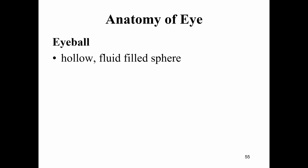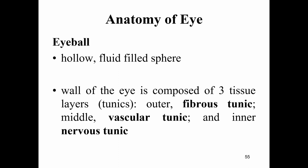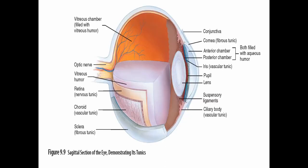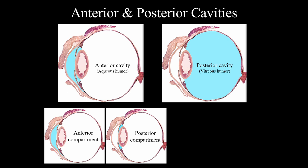The eyeball is a hollow fluid-filled sphere. The wall of the eye is composed of three tissue layers called tunics: the fibrous tunic (outermost), the vascular tunic (middle), and the nervous tunic (innermost). The eye is divided into an anterior cavity and a posterior cavity, with further compartments within the anterior cavity.